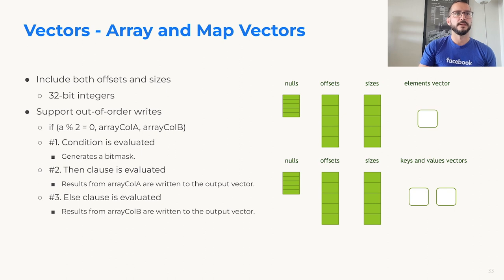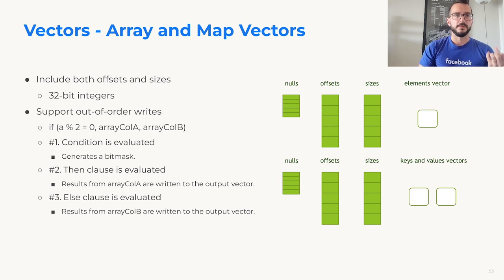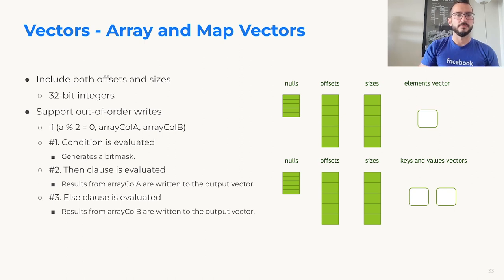There's also a difference in how we represent arrays and maps. Instead of having one vector with elements and one vector with offsets, we have a vector with elements, offsets, and sizes. This is mostly to help speed up execution of conditionals — for example, writing elements from one vector to the even positions and another to the odd positions of an output vector. You can first evaluate the condition, generate a bitmask, and then in a vectorized way evaluate the then clause and the else clause, writing those elements out of order. You can only write those elements out of order on arrays and maps if you have both offsets and size values, allowing you to play with the pointers.